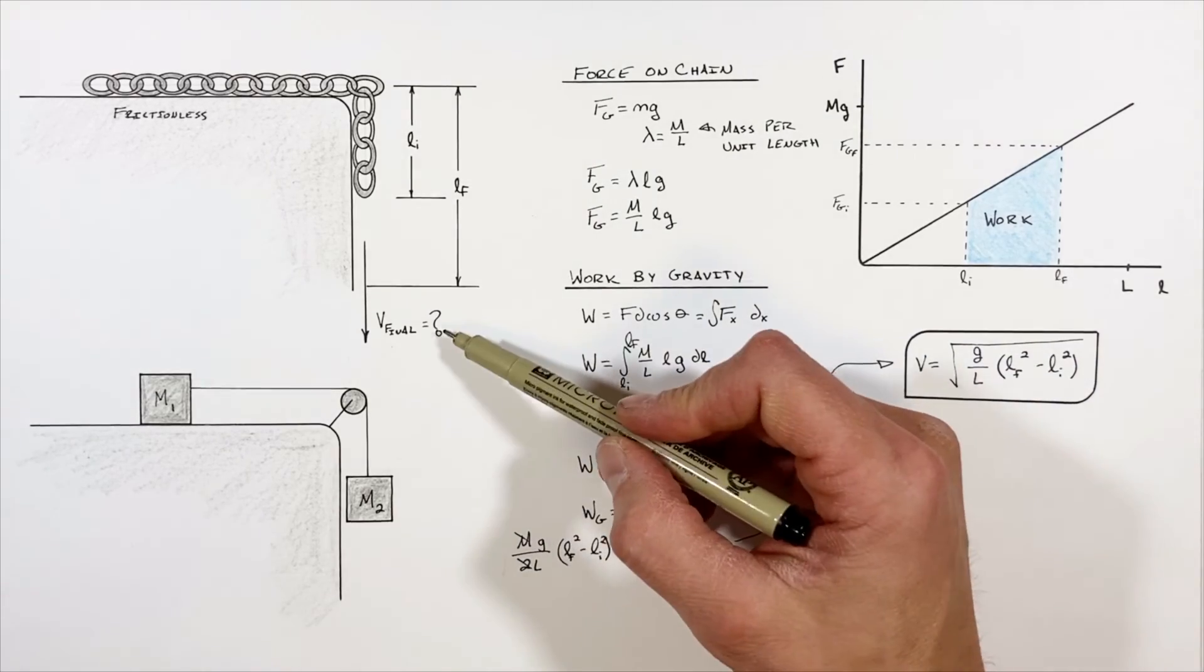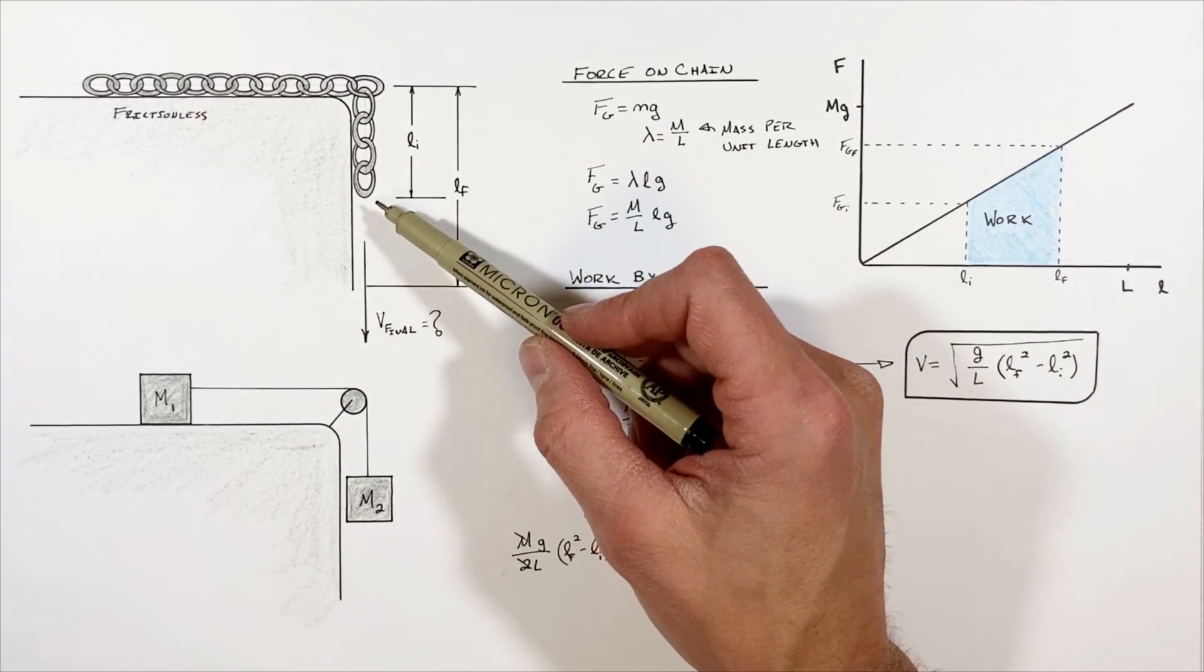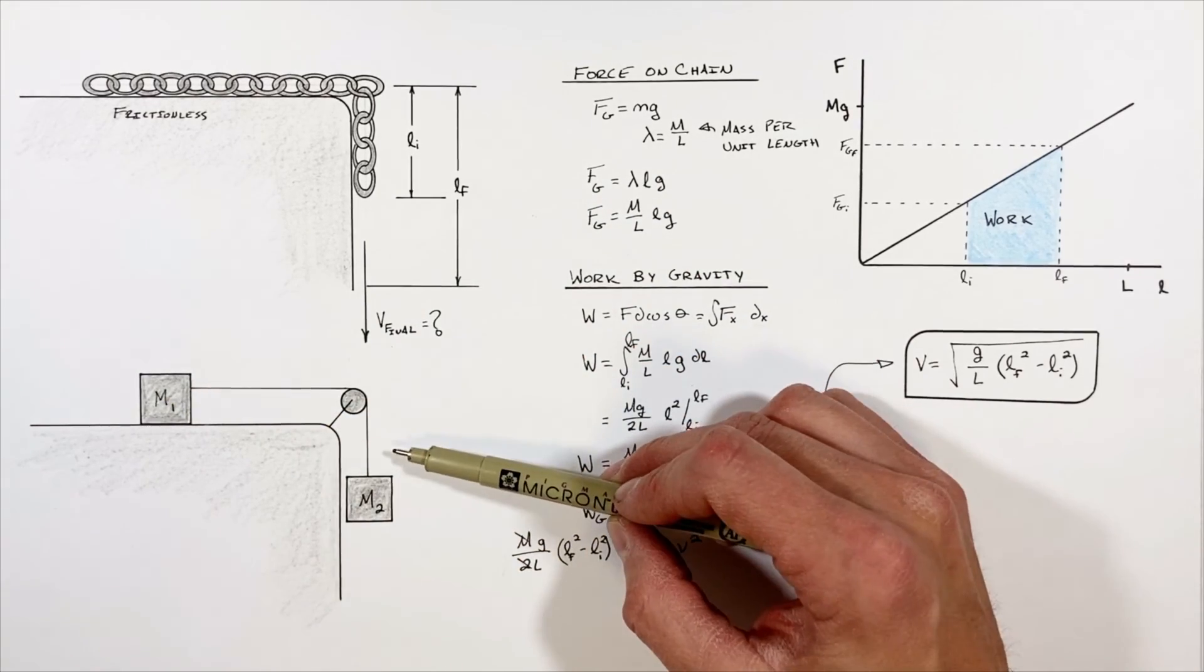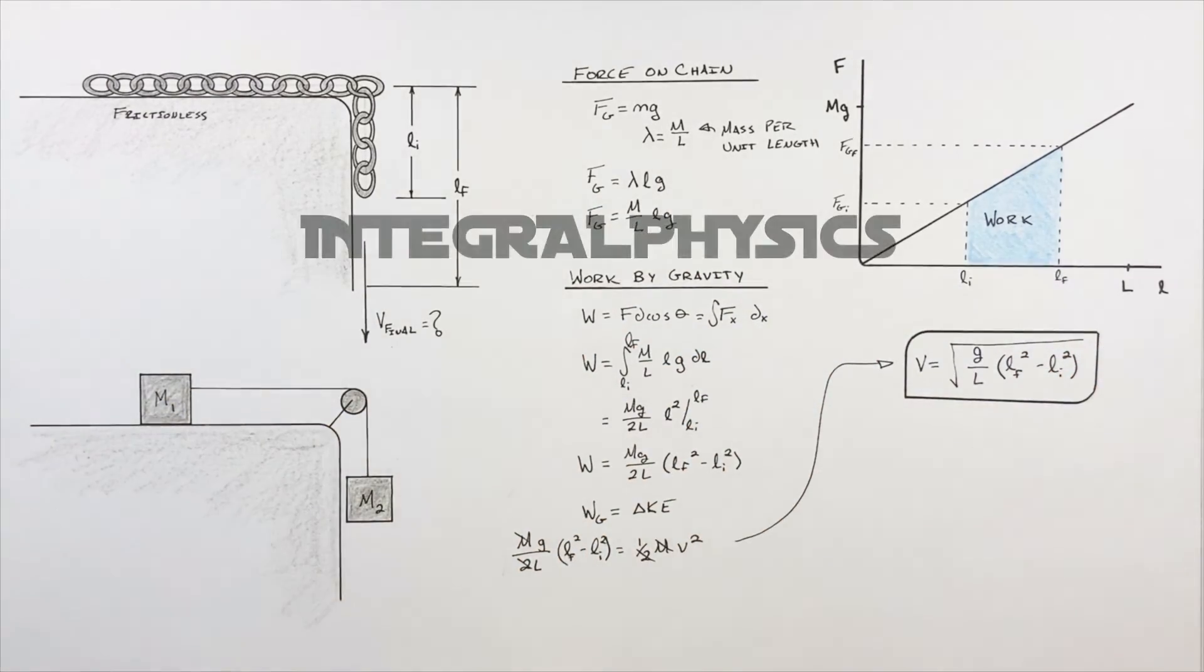So this is how we go through and solve for the final velocity of a frictionless chain as it slides off the edge of a table. Realize it is fundamentally no different than an Atwood machine, and on that note, that's all for now.